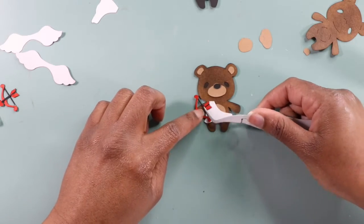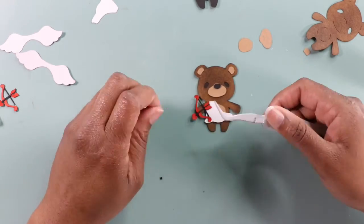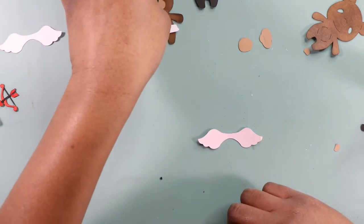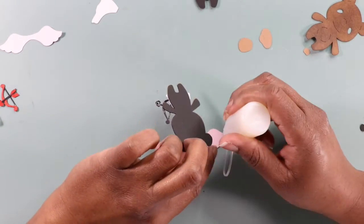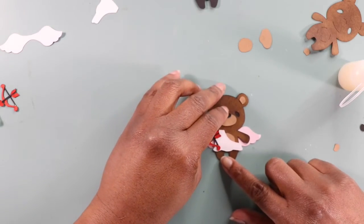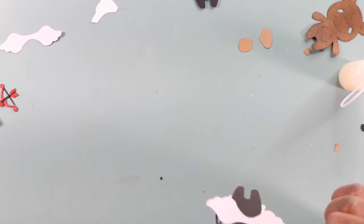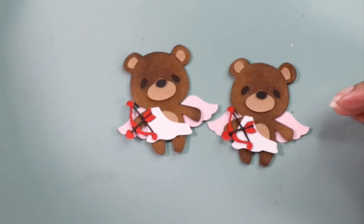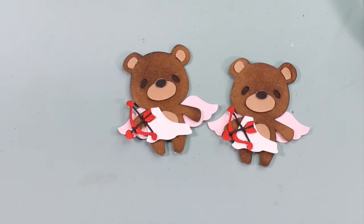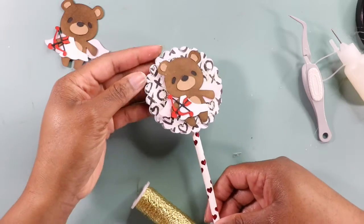Also I'm using my reverse tweezers. I find that my hands get in the way when I'm working with teeny tiny die cuts because this little fella isn't that big at all, he's actually on the small side and it just helps everything out. So now I have my two little teddy bears and they are ready to shoot some arrows.